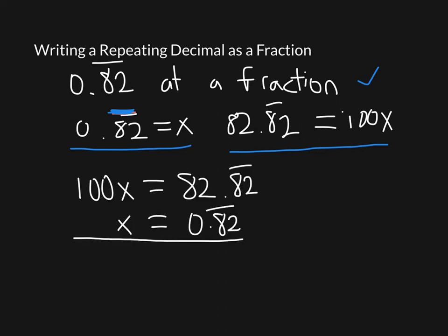So the way I set this up was I'm saying 100x is equal to 82.82 with a vinculum over the top. And then underneath that I'm having x is equal to 0.82 with a vinculum over the top. And those both things are equal. So when I subtract this and when I subtract this, they're both going to be equal amounts. So that's just using a general property of math. I can subtract the same thing from both sides and I'm going to end up with an equal expression.